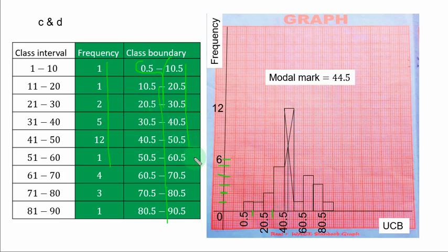The first one, frequency is 1. So this is 1. So you trace 1 from 0.5 to 10.5. That is the first bar. Now the second bar, the frequency is 1 also. So you have 10.5 to 20.5. The bars are joined together in a histogram. The next frequency is 2. That is 20.5 to 30.5. From 20, you move to 30. The next frequency is 5. That is 30.5 to 40.5. That is what you have here. The next frequency is 12. And that is 40.5 to 50.5. Next frequency is 1. You have 4, 3, and 1.